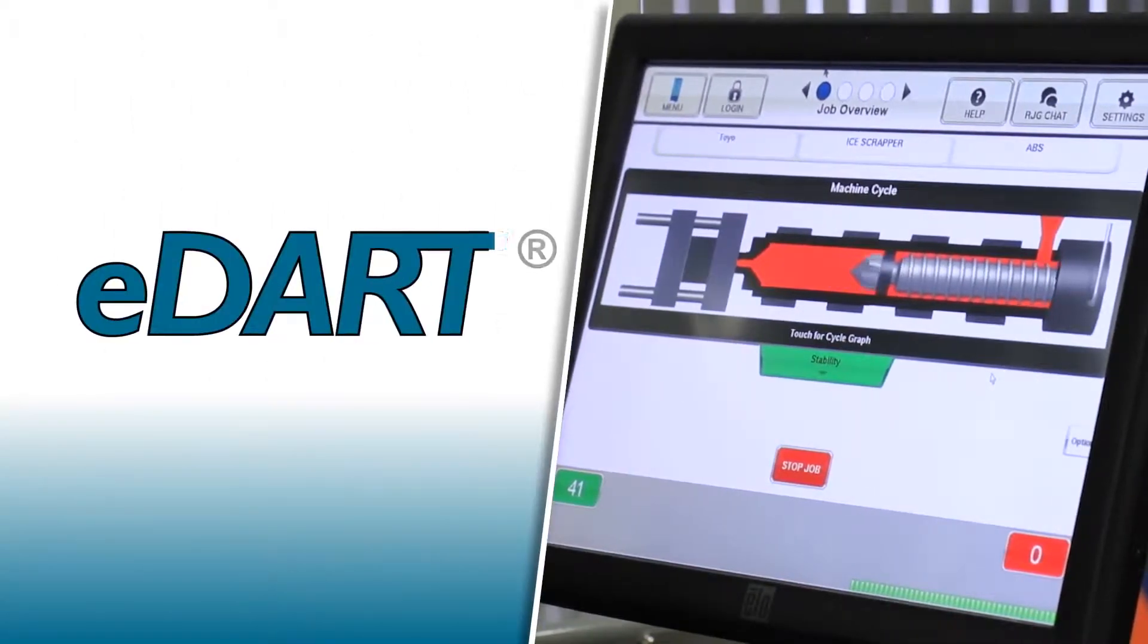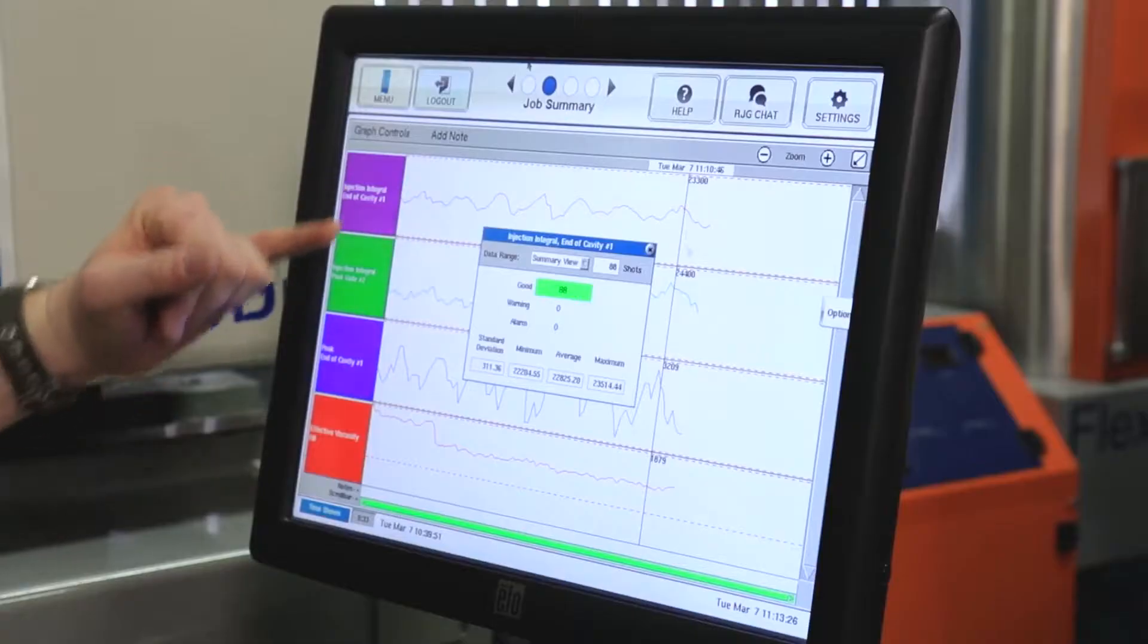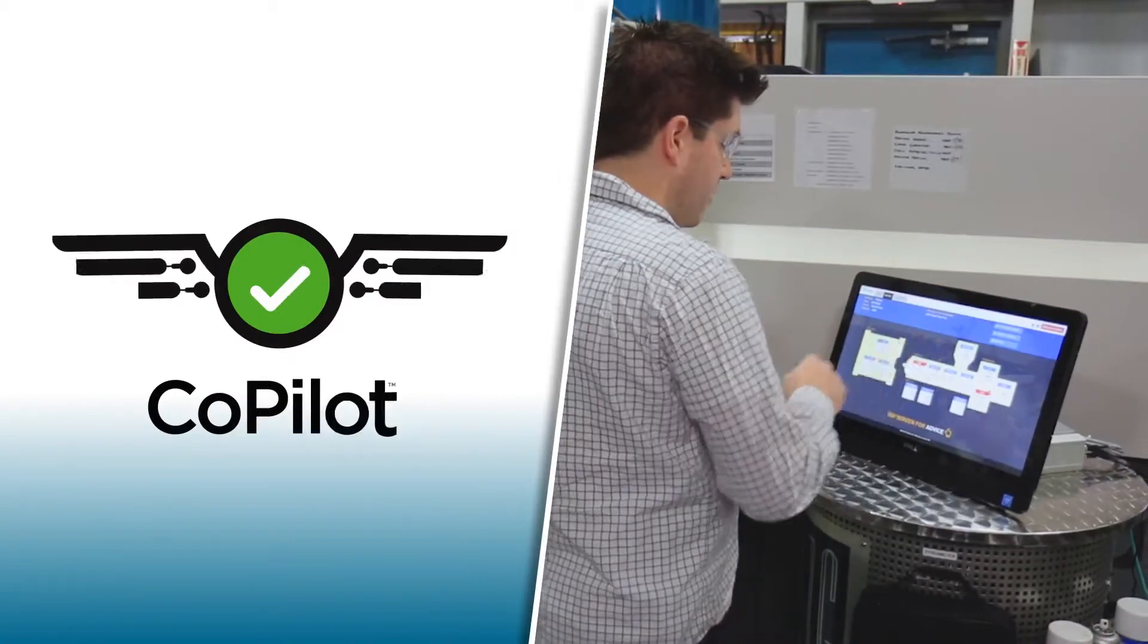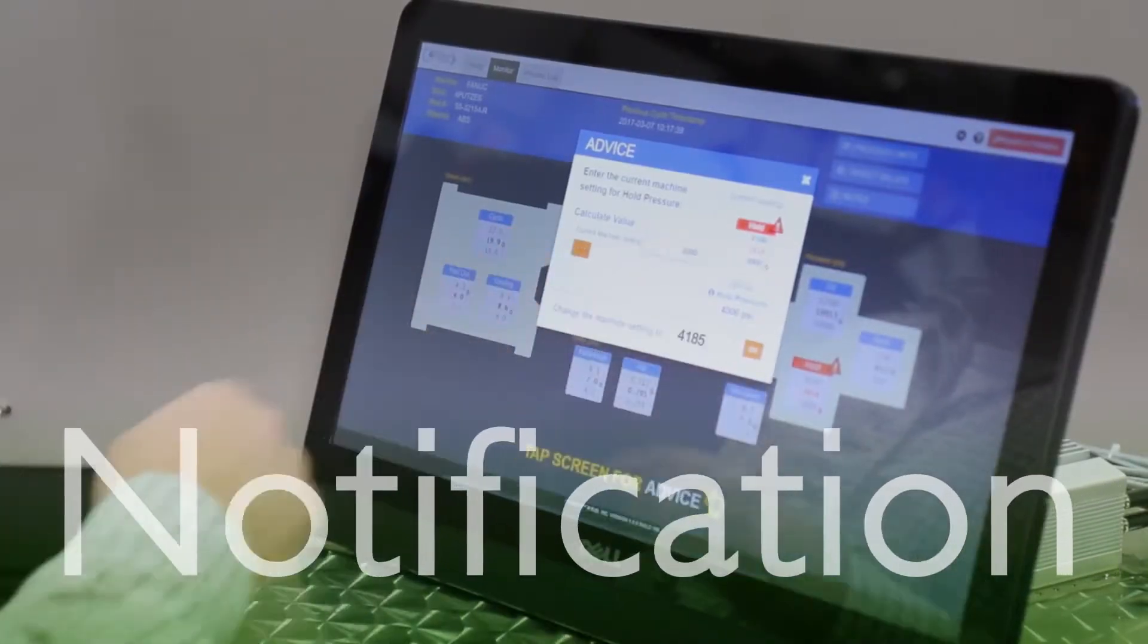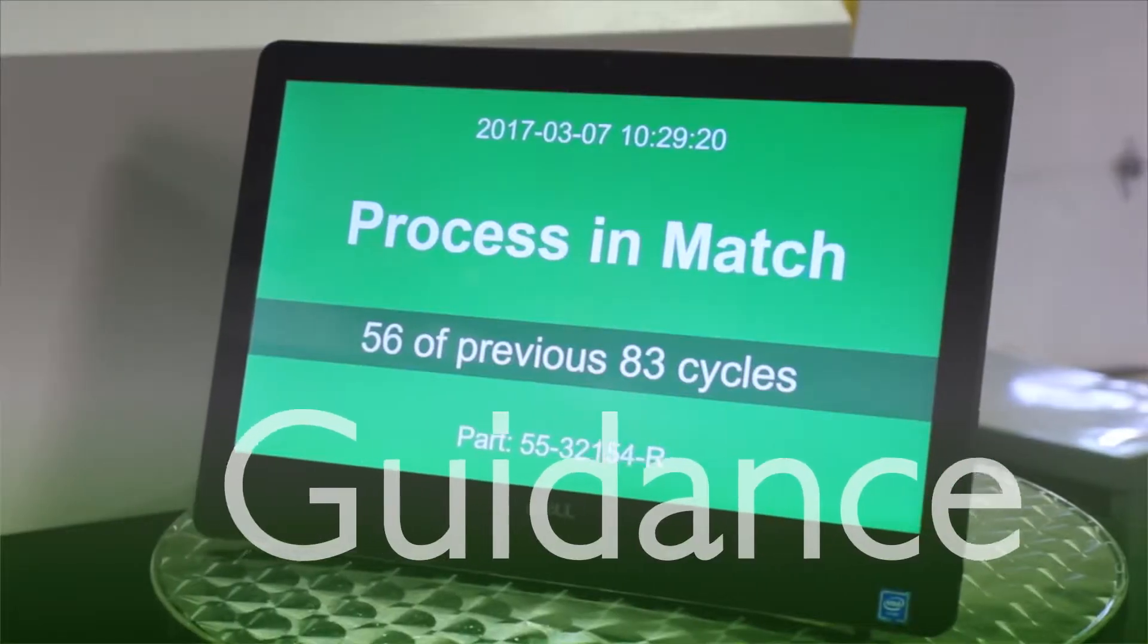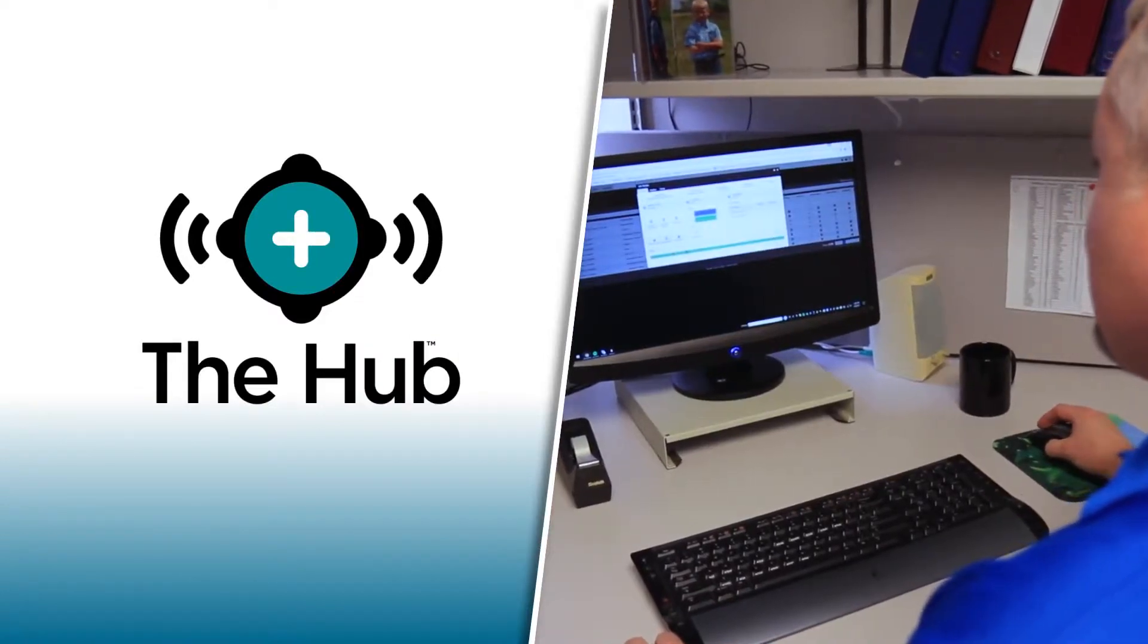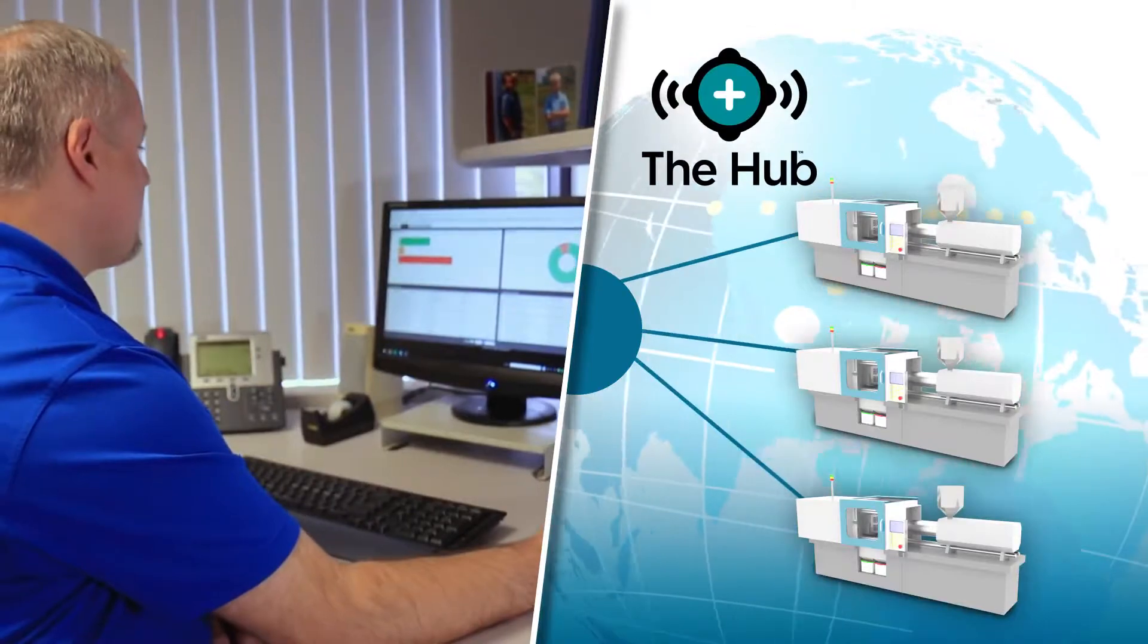RJG's eDART system enables molders to monitor, stabilize, and control their injection molding processes. The co-pilot system notifies technicians when the process is not running correctly and then shows them the steps to take to quickly and easily fix the issue. The hub gives them the ability to network machines, making it possible to see data instantly from anywhere in the world.